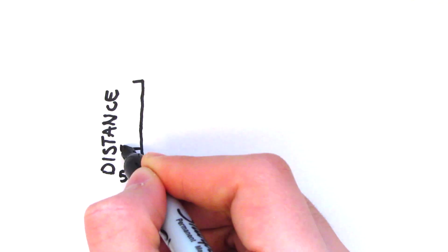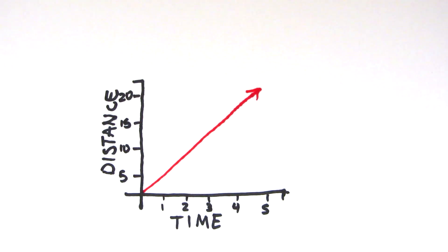You can then use the numbers on the axis to work out the actual speed you are travelling. The equation for speed is distance over time, so all you have to do is read the numbers. If you travelled 20 meters in 5 seconds, then your speed would be 4 meters per second.